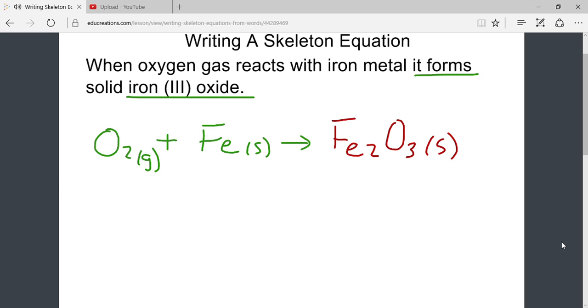Notice this is a skeleton equation and not a balanced equation. We can see that there is one iron atom on the left side, but two on the right side. Again, this is because this is a skeleton equation and not a balanced equation. Let us look at one more example of skeleton equations.